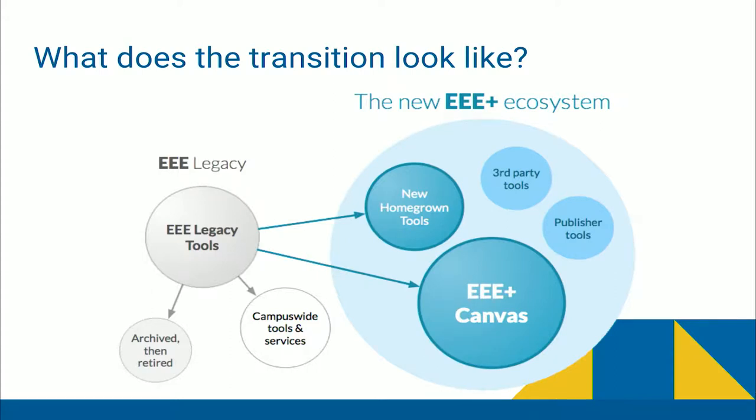What exactly is this transition we're talking about? The vision is to start from the suite of legacy tools currently in EEE — our homegrown system — and transition that into a more dynamic ecosystem with EEE plus Canvas at the center. In practical terms, we're going to provide new homegrown tools with functionality custom-tailored to UCI, and also incorporate external tools, which Canvas makes possible. This is the long-term vision, and it will take a number of years to get there.